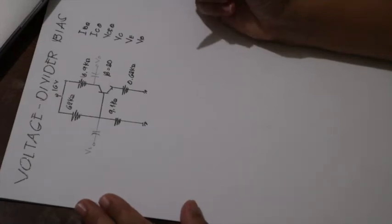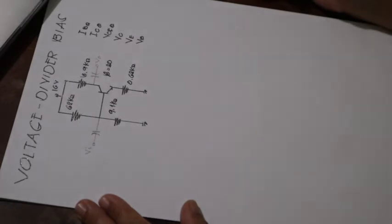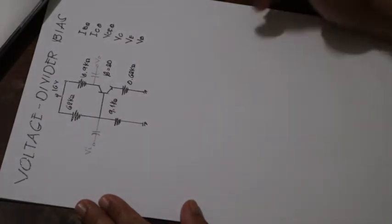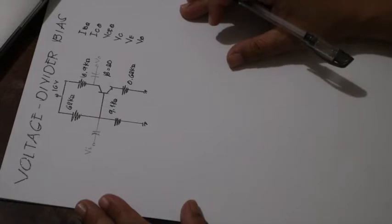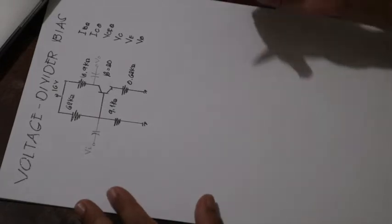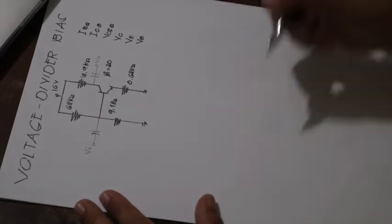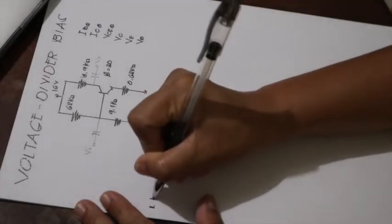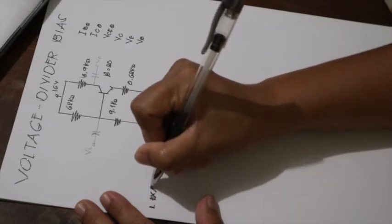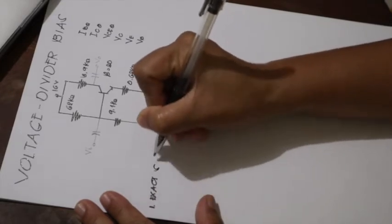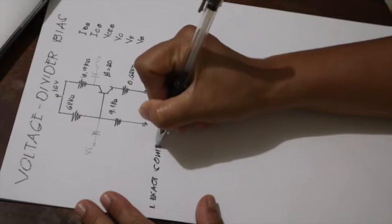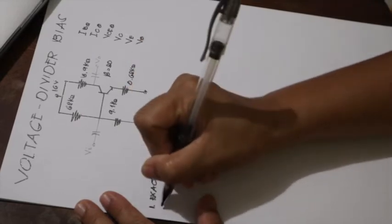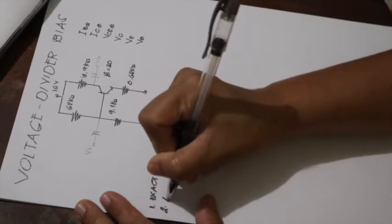Hi class! I'm going to show you the solution of a voltage divider bias circuit. There are actually two types or two solutions for this: one is the exact solution, and the other one is the approximate solution.